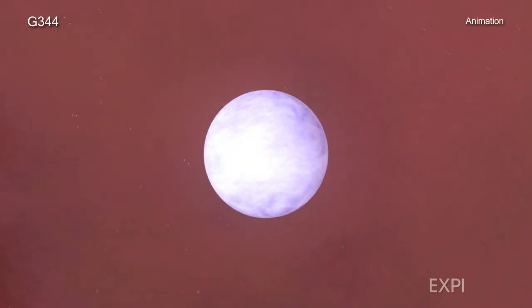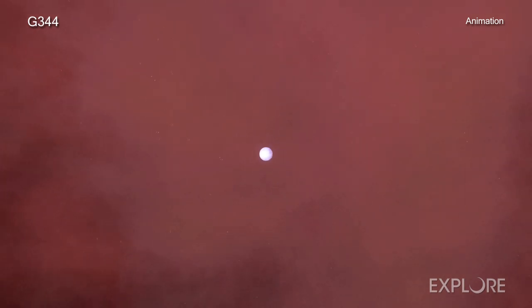White dwarfs are among the most stable of stars. They are stars that have exhausted most of their nuclear fuel and shrunk to about the size of Earth, yet still contain about the same mass as the Sun.